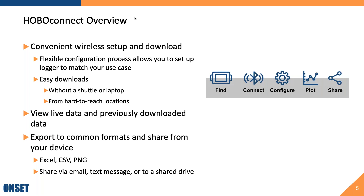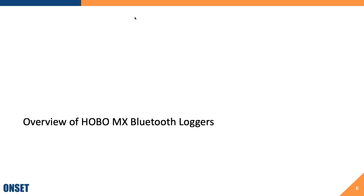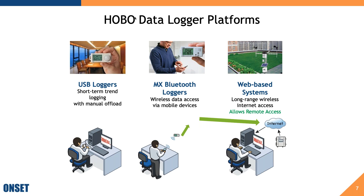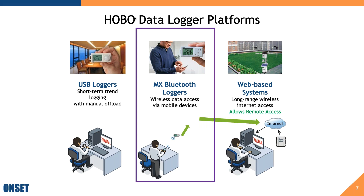HOBO Connect offers a variety of tools to manage your data, including the option to view live data as it comes into the logger and to view and graph previously downloaded data. You can also easily export data in common formats such as Excel, CSV, or PNG for images, and share those directly from your device via email, text message, or to a shared drive such as Google Drive, OneDrive, or Dropbox. HOBO Connect is designed to work with our HOBO MX Bluetooth loggers, and you also have the option to add an MX gateway or push directly from HOBO Connect to our cloud system, HOBOlink.